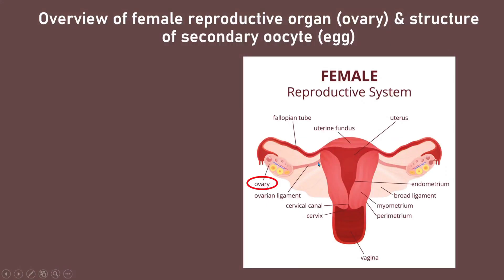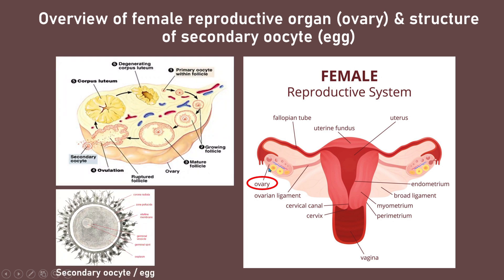This is a female reproductive system. It consists of two ovaries and one uterus. Each ovary is connected to the uterus by a fallopian tube. We will discuss the ovary, since it is the organ where the secondary oocyte or egg is developed.